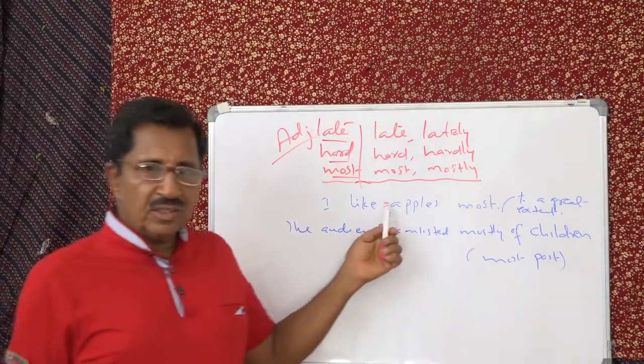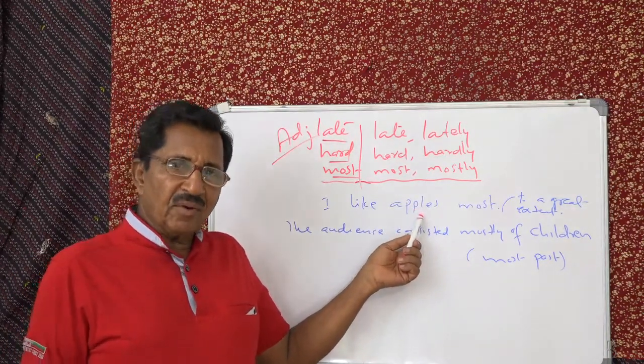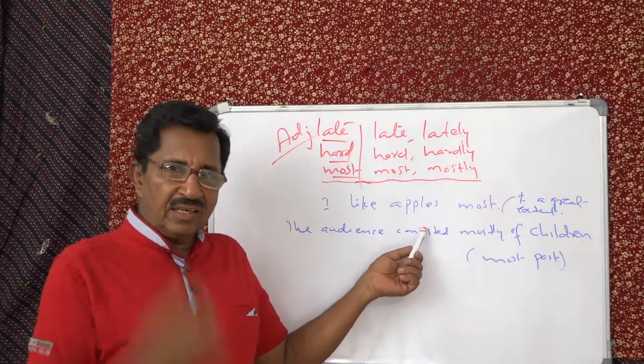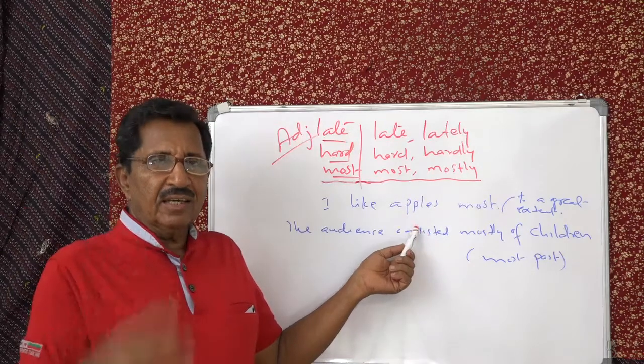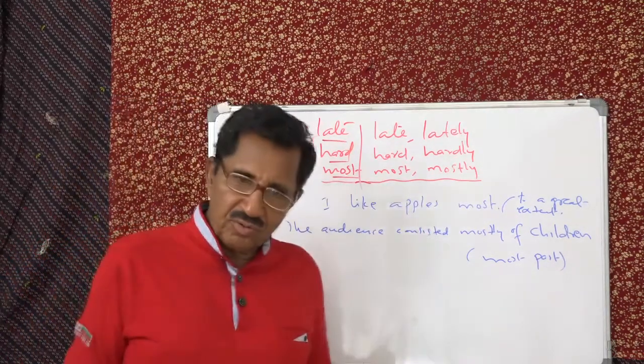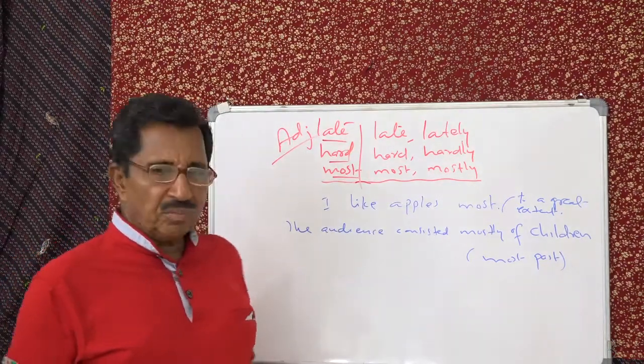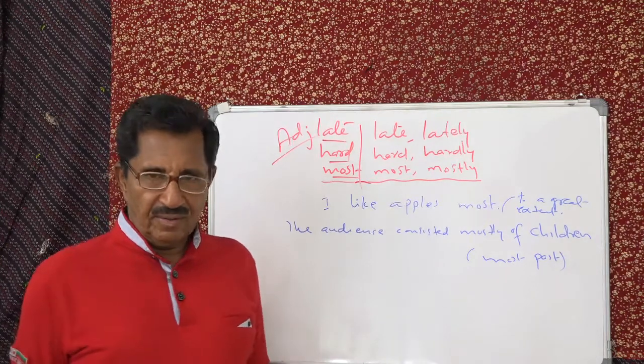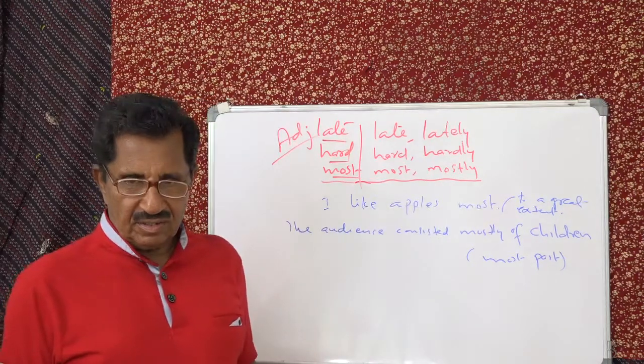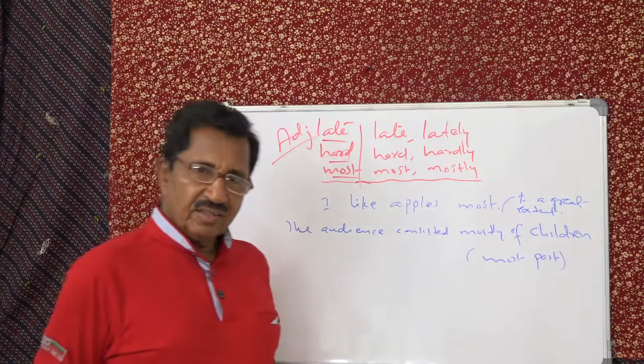Then most, mostly. Most is an adverb of degree. To a great extent. I like apples most. I like strawberry most. I like gooseberry most. Whatever it is. And then mostly means most part. Most part of the audience. You understand now? The audience consists mostly of children.